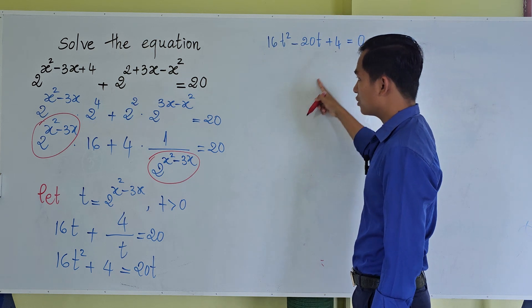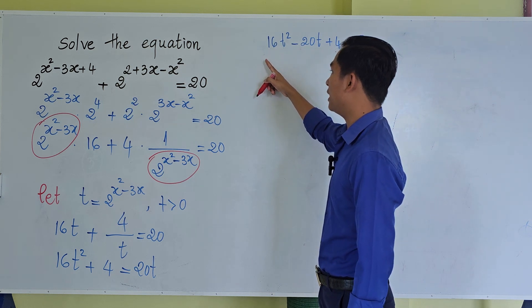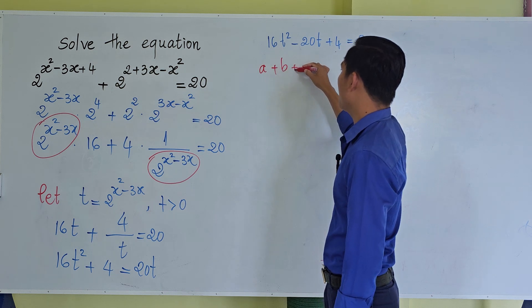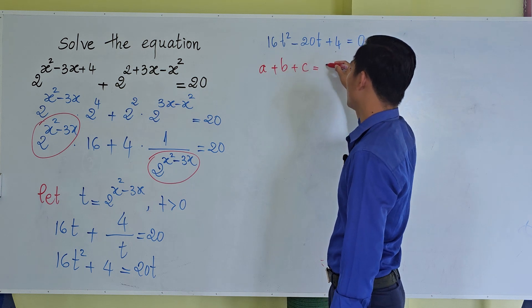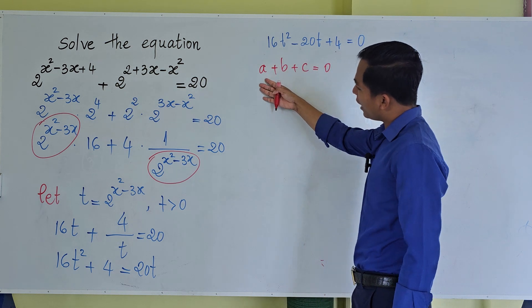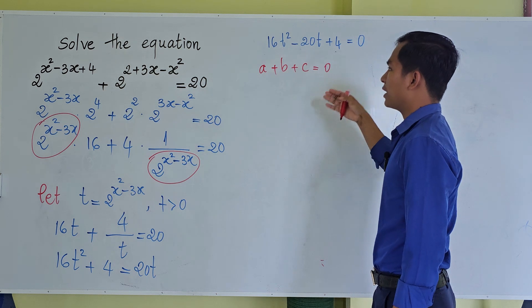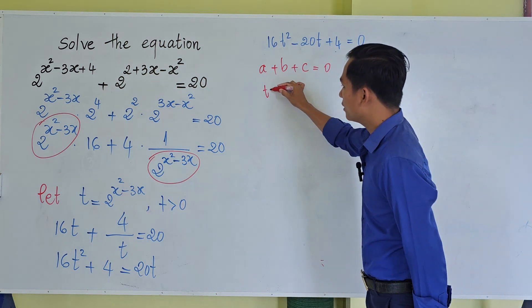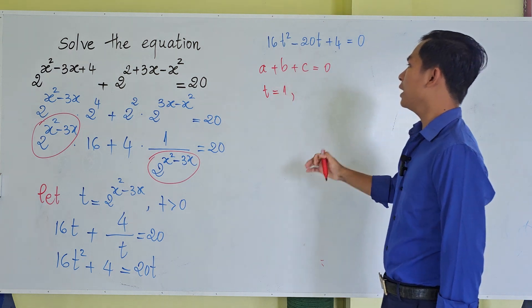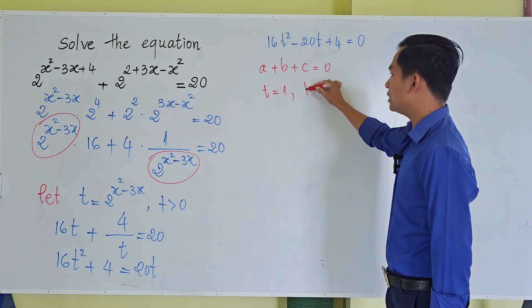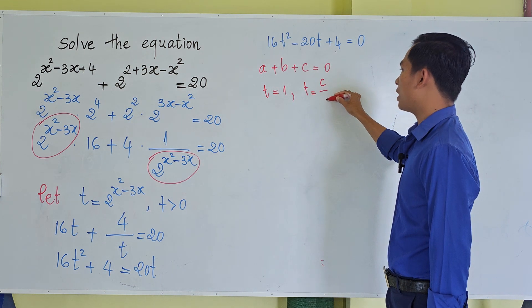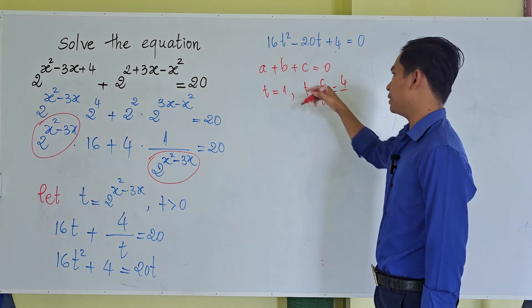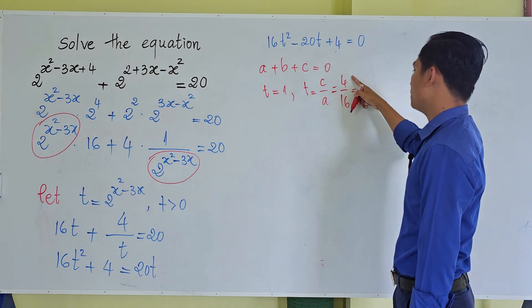Notice that 16 - 20 + 4 = 0, so a + b + c = 0. Using this property, one root is t = 1, and the other root is t = c/a = 4/16 = 1/4.